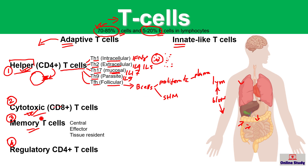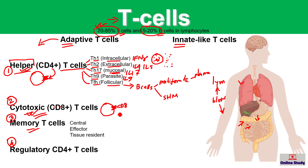Cytotoxic T cells are toxic to other cells, such as cancer cells or infected cells. They express the CD8 protein on their surface, so they are also called CD8 T cells.